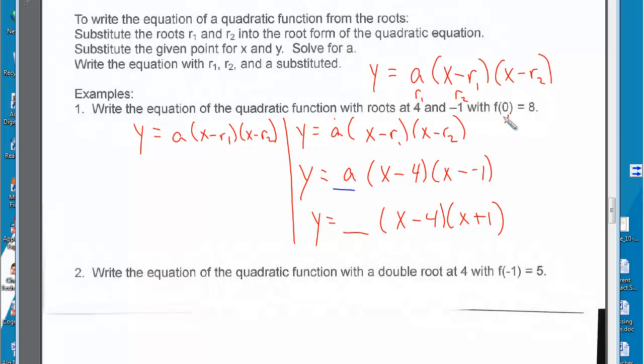0 will be the x and 8 will be the y. So we have 8 equals a, which we don't know, times x is 0 minus root 1, which is 4, times 0 minus root 1, which is negative 1.